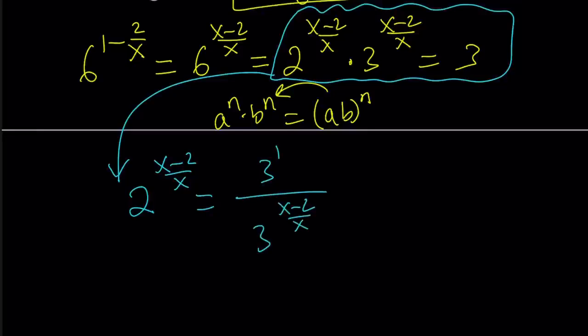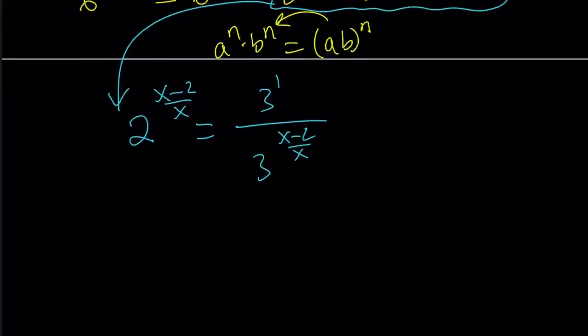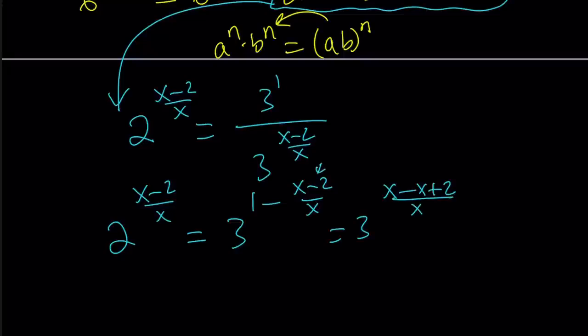This is 3 to the power 1, so we're supposed to subtract the exponents, right? Let's go ahead and do that. 3 to the power 1 minus x minus 2 over x. And that is 3 to the power x minus x plus 2. Don't forget to negate this negative here. Divided by x. And x cancels out, and we end up with 3 to the power 2 over x. And where does that come from? From here. So these two are equal.